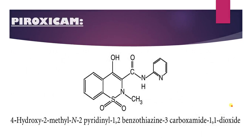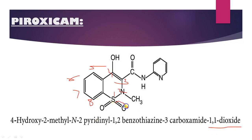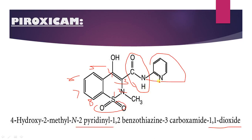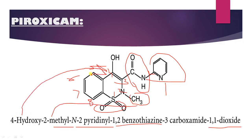The first example is piroxicam. The IUPAC numbering: position 1, 2, 3, 4-hydroxy-benzothiazine, then positions 5, 6, 7, and 8. This is 1,1-dioxide — two oxygens on sulfur — and 3-carboxamide. The carboxamide N is pyridine, specifically 2-pyridyl: positions 1 and 2, that is why it is 1,2-benzothiazine. Position 2 has a methyl substituent, and position 4 is hydroxy. So the IUPAC name of piroxicam is 4-hydroxy-2-methyl-N-2-pyridinyl-2H-1,2-benzothiazine-3-carboxamide 1,1-dioxide.